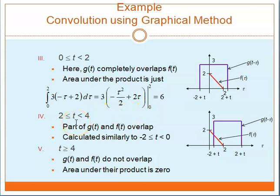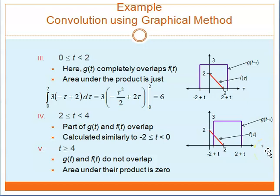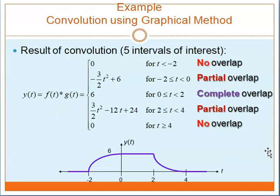The fourth part is when T is greater than or equal to 2 and less than 4 — part of Gt and Ft overlap, so calculate the area similarly. Finally, when T is greater than or equal to 4, Gt and Ft do not overlap, so the area under the product is 0. The result of the convolution has 5 intervals of interest, giving the output of the convolution between Ft and Gt.